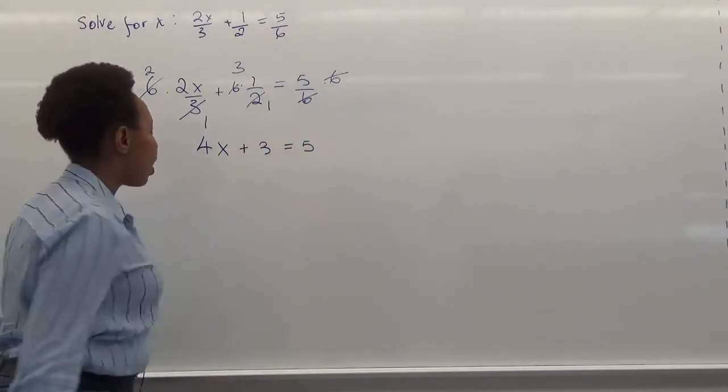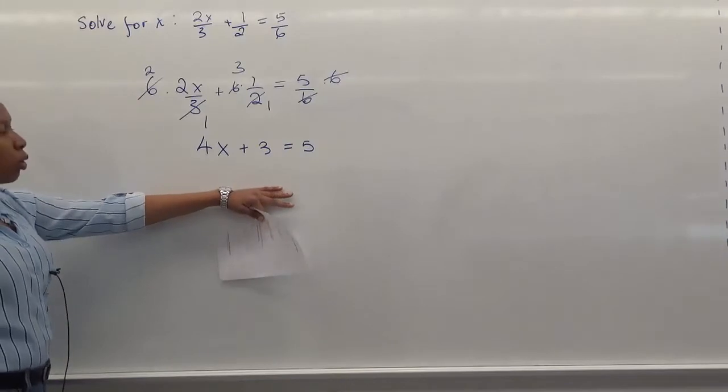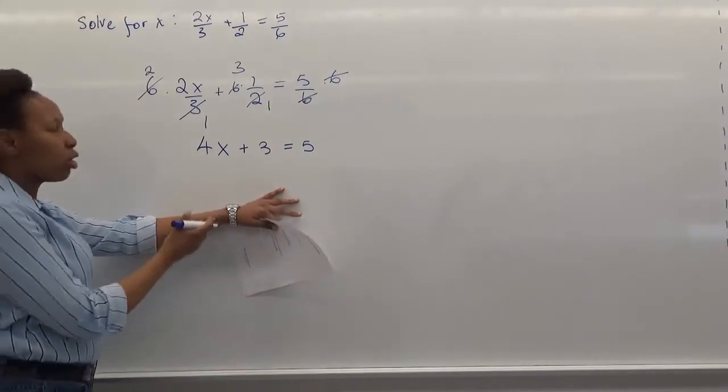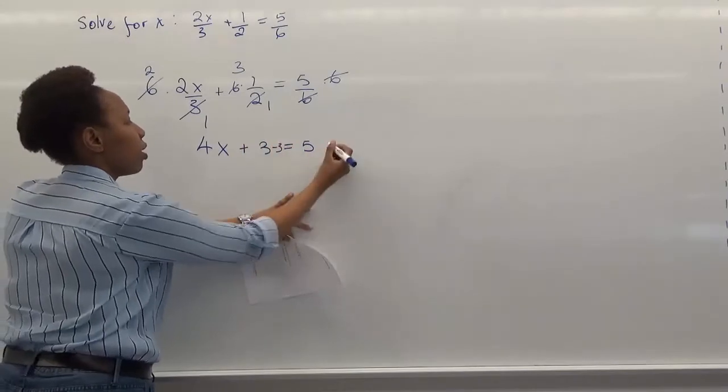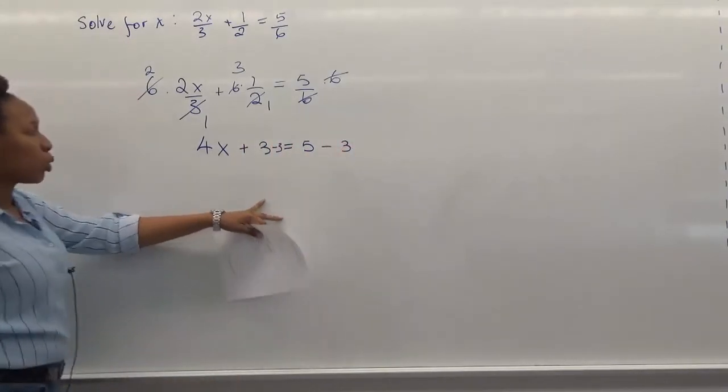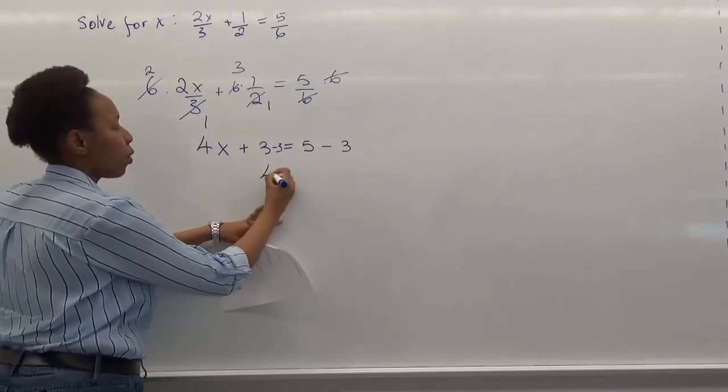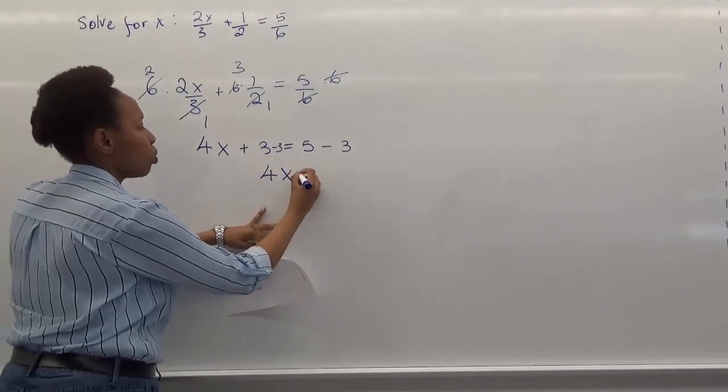This is all we have left. And then here, what we also do now is subtract 3 to make sure that this 3 cancels out. So we have minus 3 and minus 3. So once we're done, we're going to have 4x equals 2.